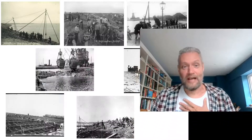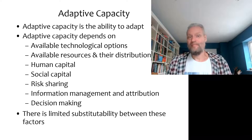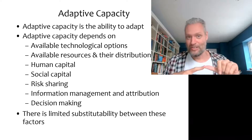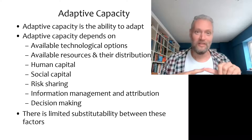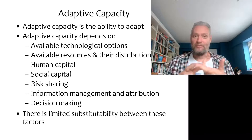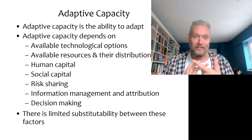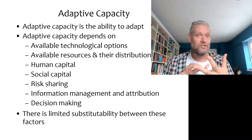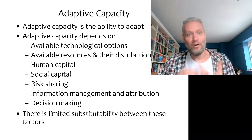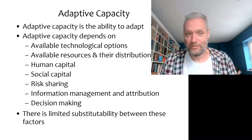Going back to what adaptive capacity means: you need to know what to do, you need the technologies available to address your vulnerability, you need the resources to pay for those technologies, and you also need the political will to mobilize those resources to do something about your vulnerability.